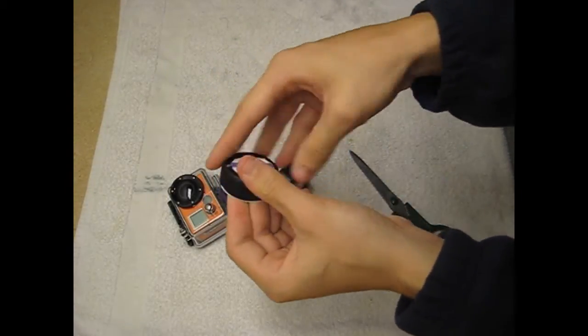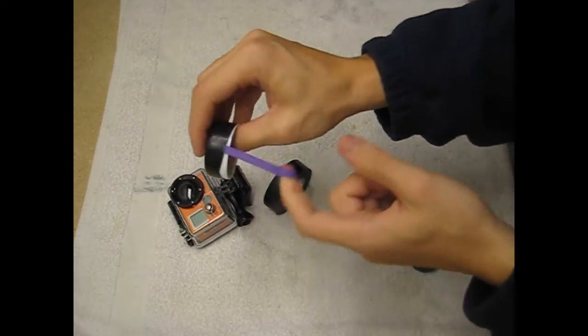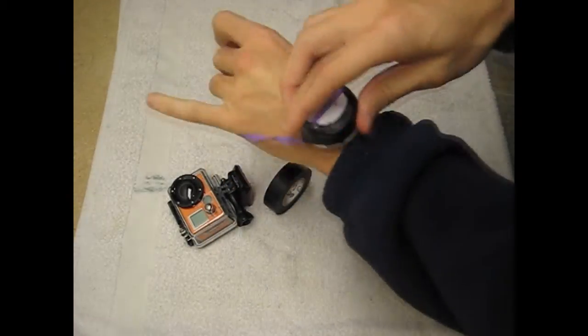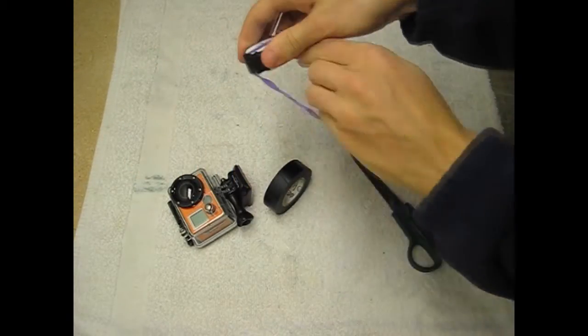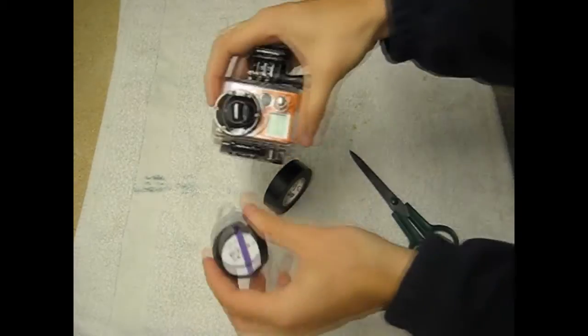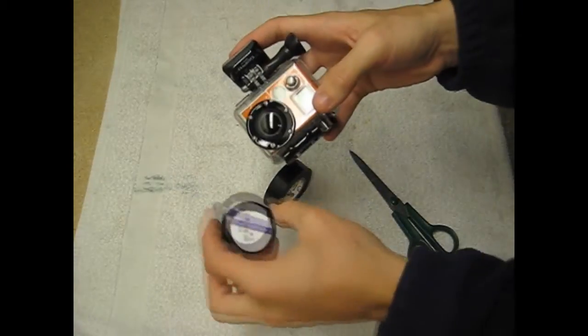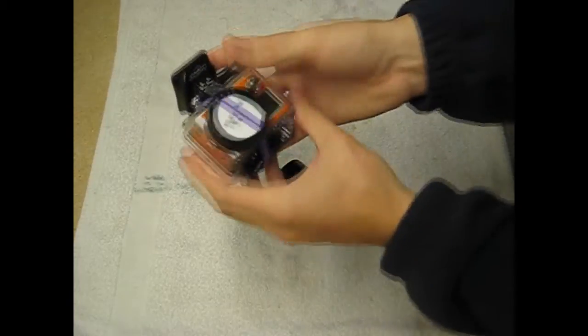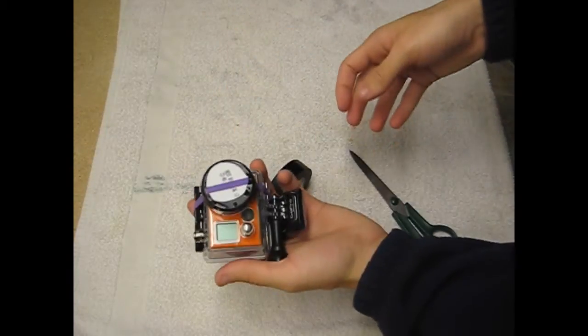That's probably good enough, but you could put some more tape on if you want. And there you go, a little lens cover. When you're not using it, you can just put it on your wrist or throw it in your backpack, and that'll keep your lens nice and safe until you're ready to film.